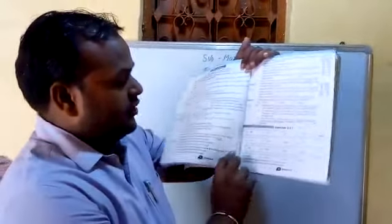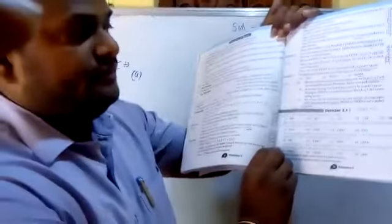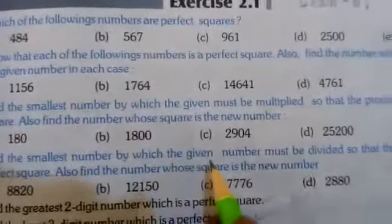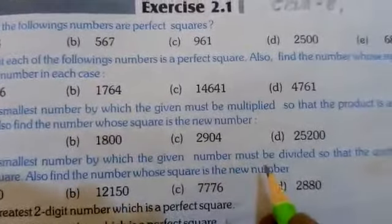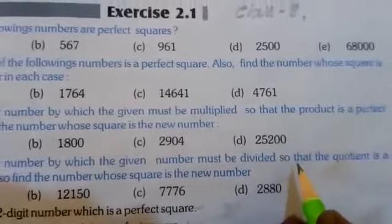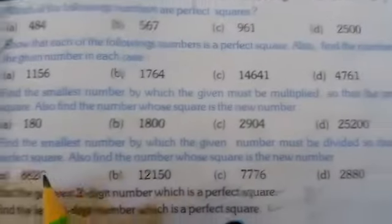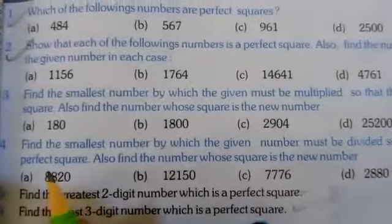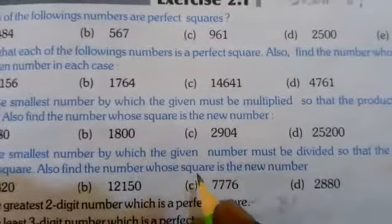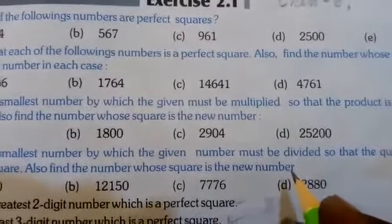The question is 4. Exercise 2.1, question number 4 is: find the smallest number by which the given number must be divided so that the quotient is a perfect square. Also find the number whose square is the new number.